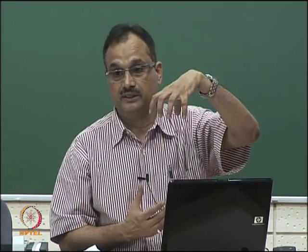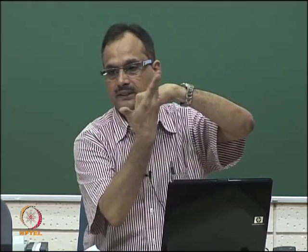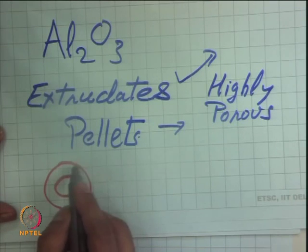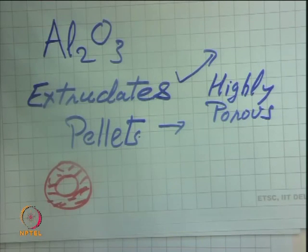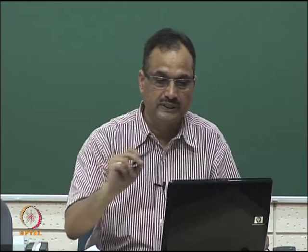For mass-transfer-controlled reactions, the catalyst shape may be trilobed, quadrilobed, or pentalobe because we want a large external surface area — like a fin structure where you have a cylindrical geometry with fins, similar to a radiator. Ring structures also have large surface area and less pressure drop compared to a pellet. Depending upon the reactor system and type of reaction, we select a definite shape of catalyst.